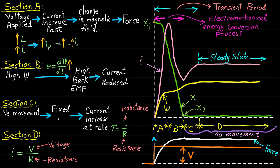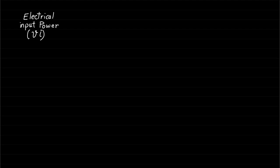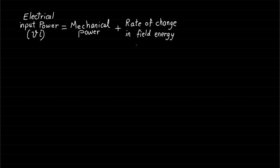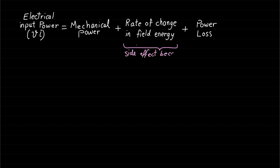This statement will be proved during the upcoming lectures. The electrical input power, represented by the voltage and current, is transferred during the electromechanical conversion process into three parts: the first part is the mechanical power represented by the force and linear displacement; the second part is the rate of change in the field energy or increase in magnetic flux linkage; and the third part is the power loss. The increase in the stored magnetic field energy is just a side effect because of the movement.